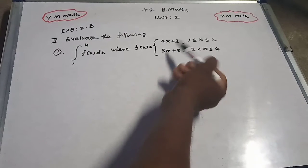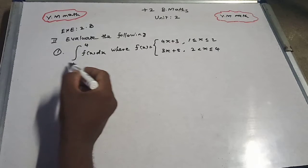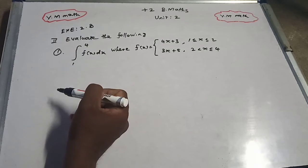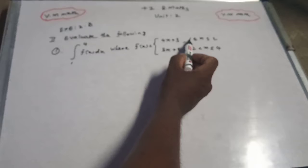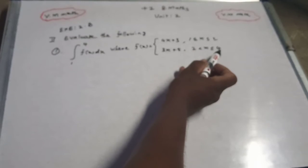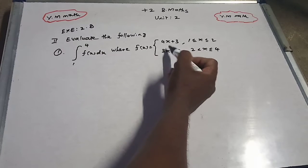For this integral, f(x) is split into two pieces, but the integration is from 1 to 4. The starting limit is 1 and ending limit is 4, but the function splits at 2.